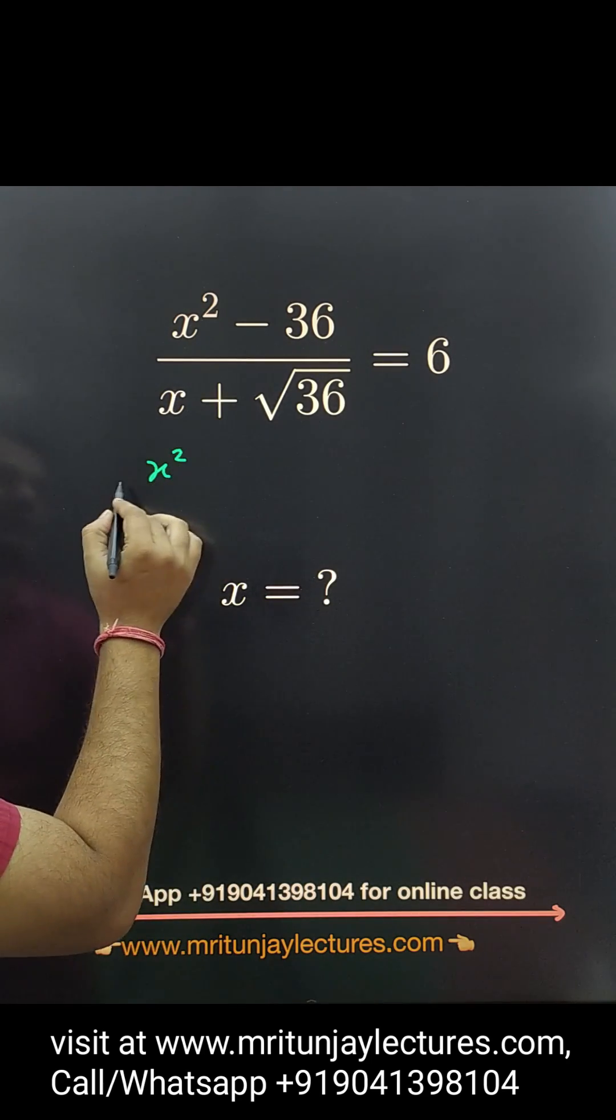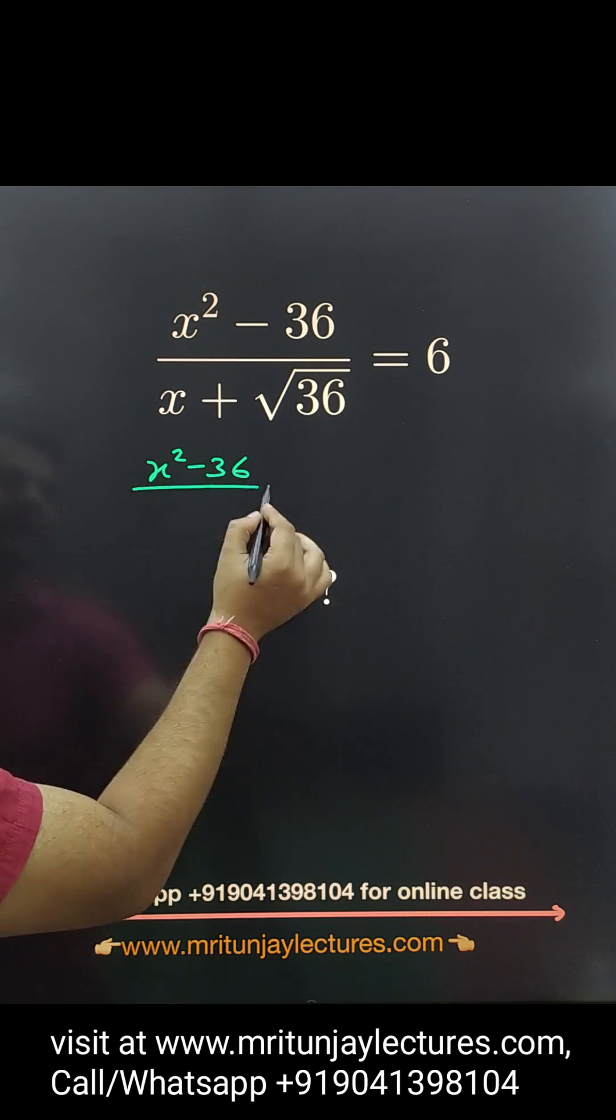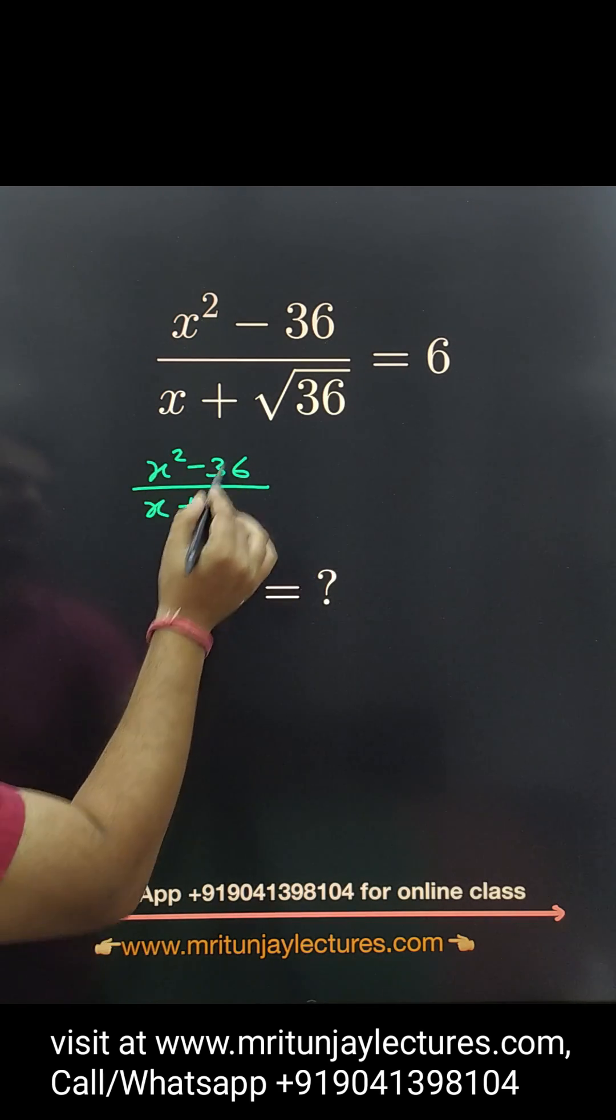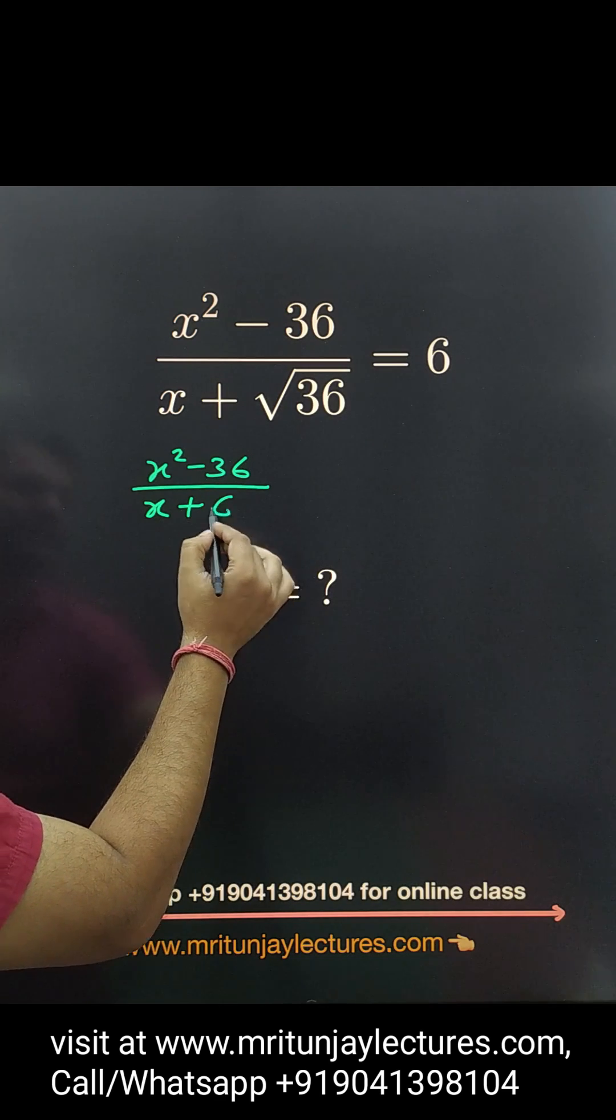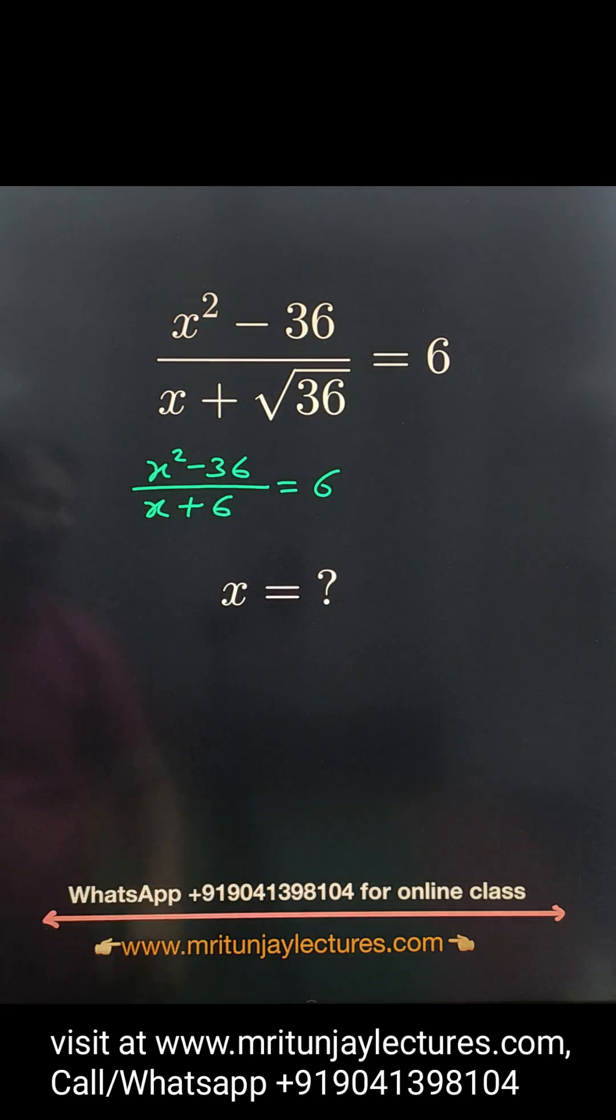x² minus 36 divided by, this one is written as x + √36, that is 6, equals 6. I hope that's clear.